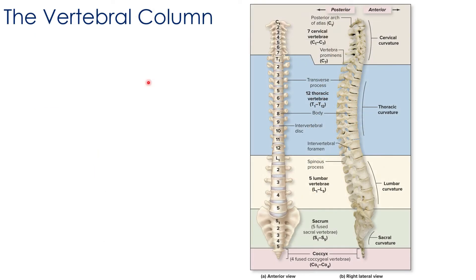Let's begin with the vertebral column. The vertebral column provides vertical support for the body, supports the weight of the head, helps maintain posture, and transfers the weight of the axial skeleton to the appendicular skeleton of the lower limbs. It also houses and protects the spinal cord and provides a passageway for spinal nerves. The adult vertebral column consists of 26 bones, including 24 individual vertebrae plus the fused vertebrae forming the sacrum and coccyx.